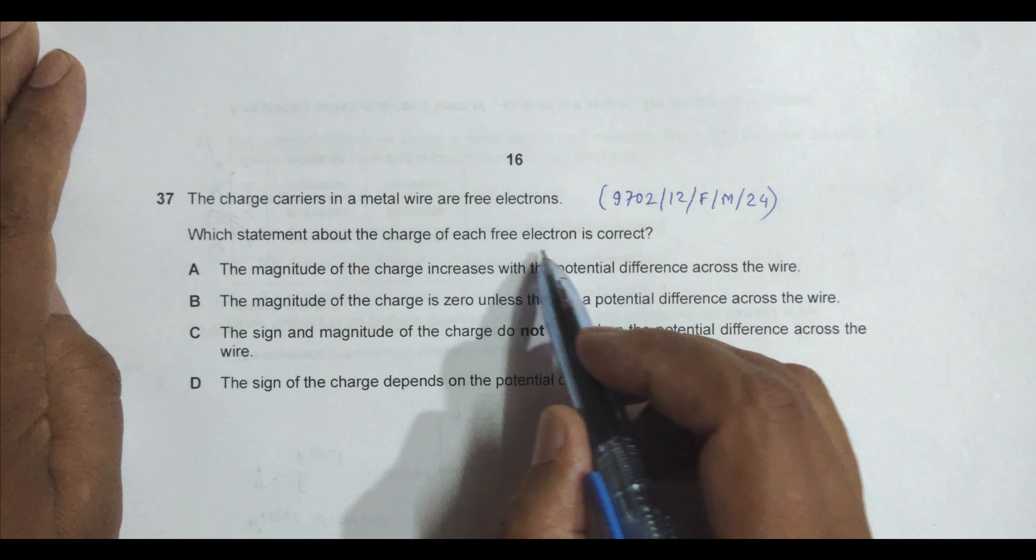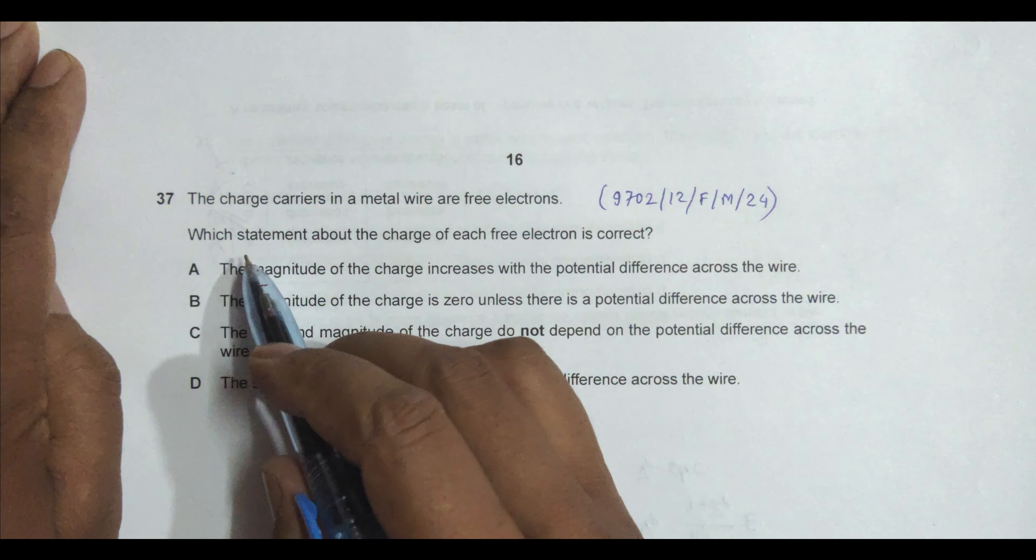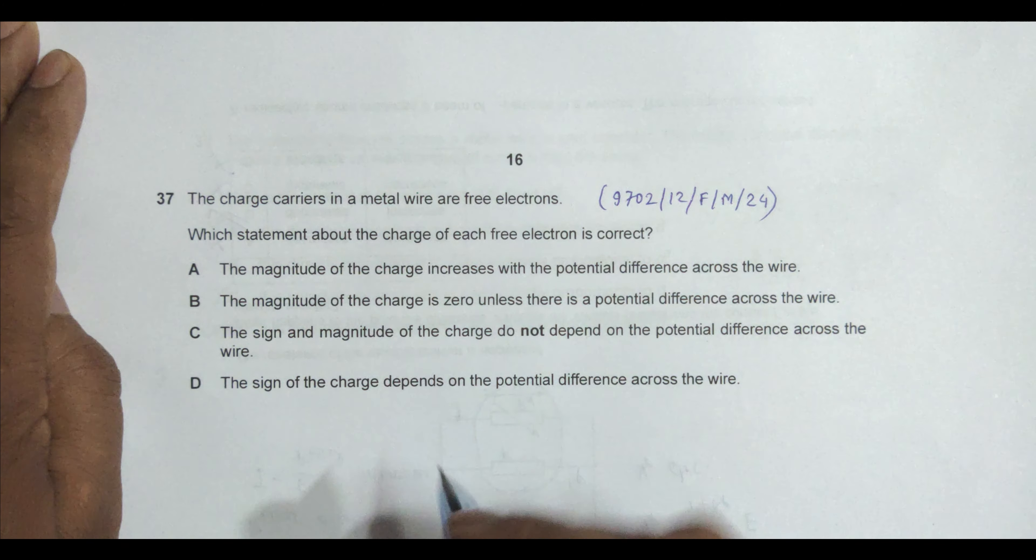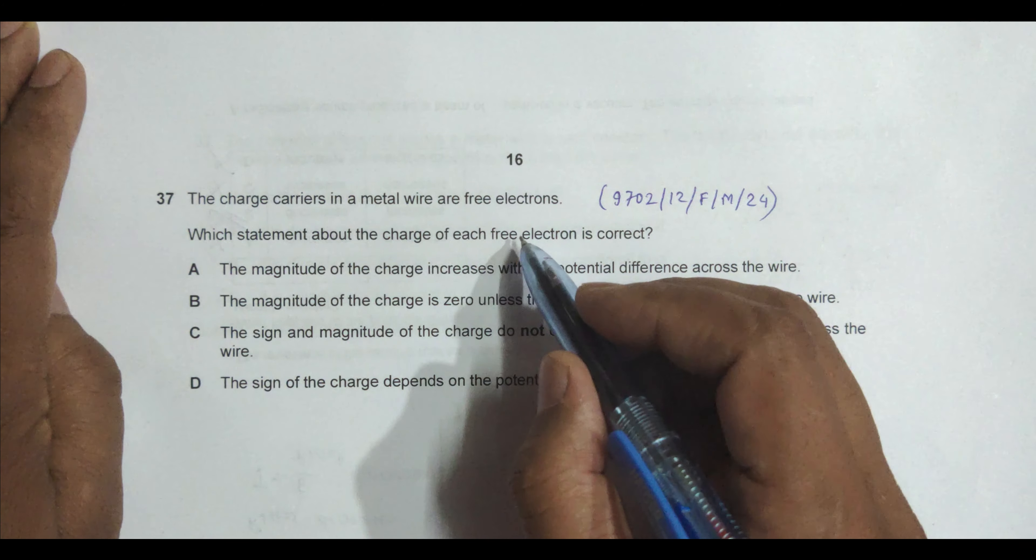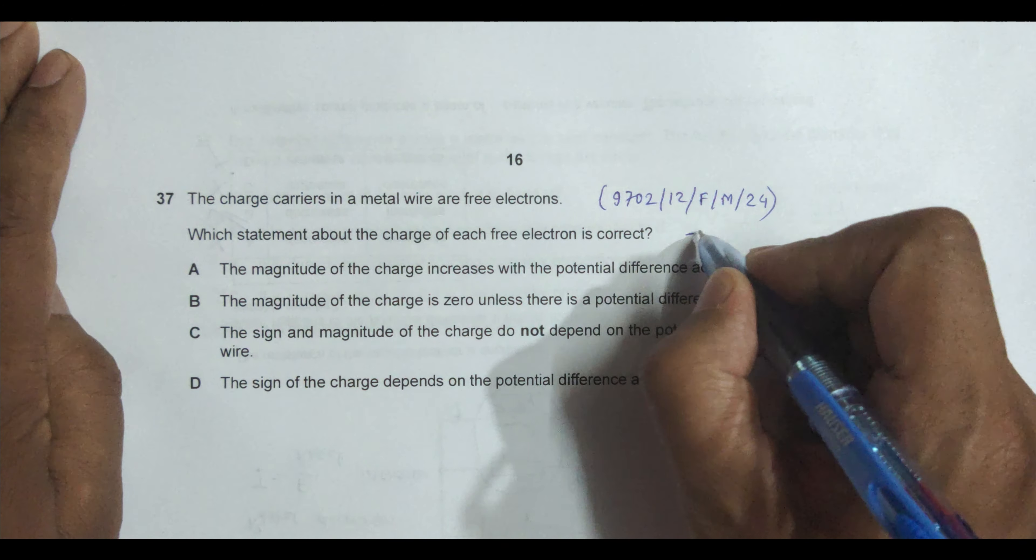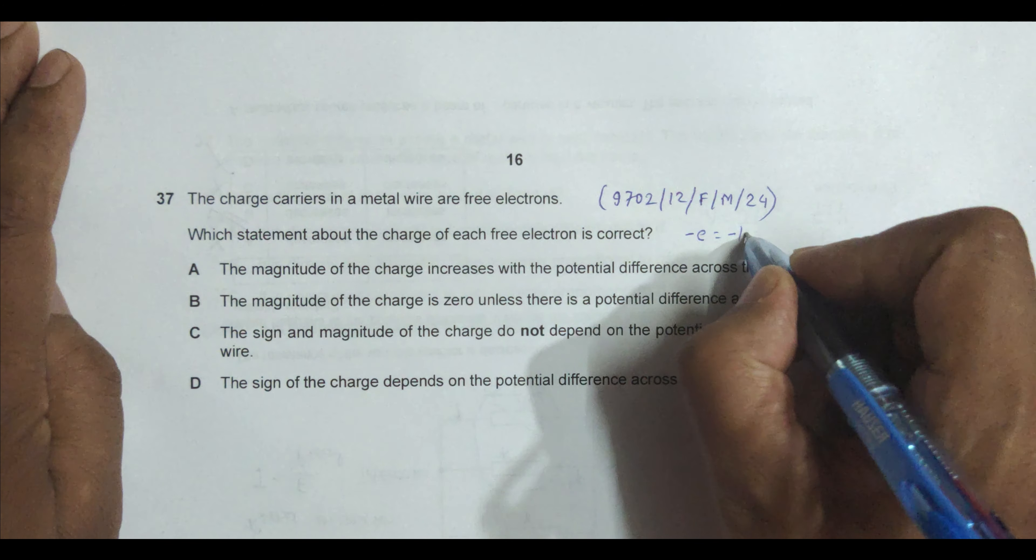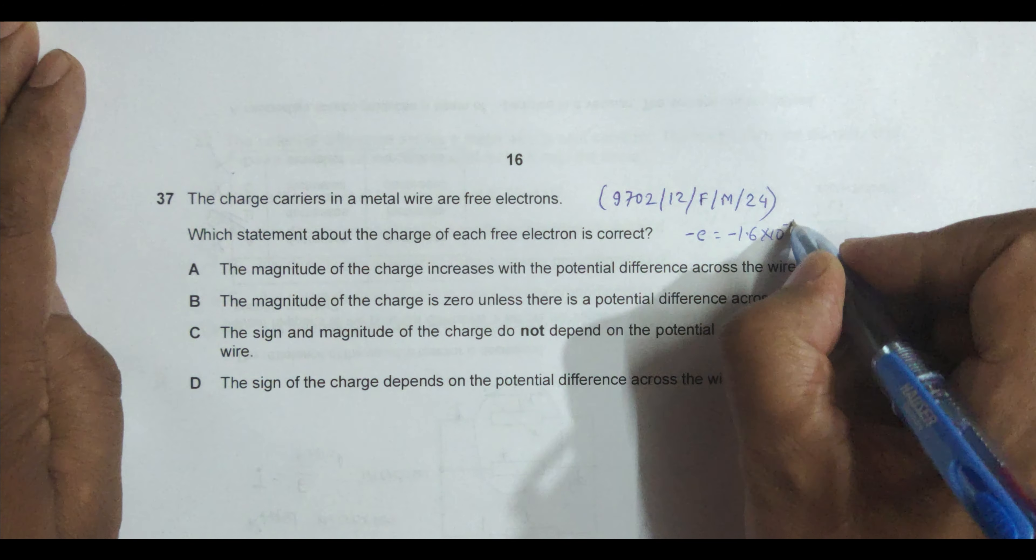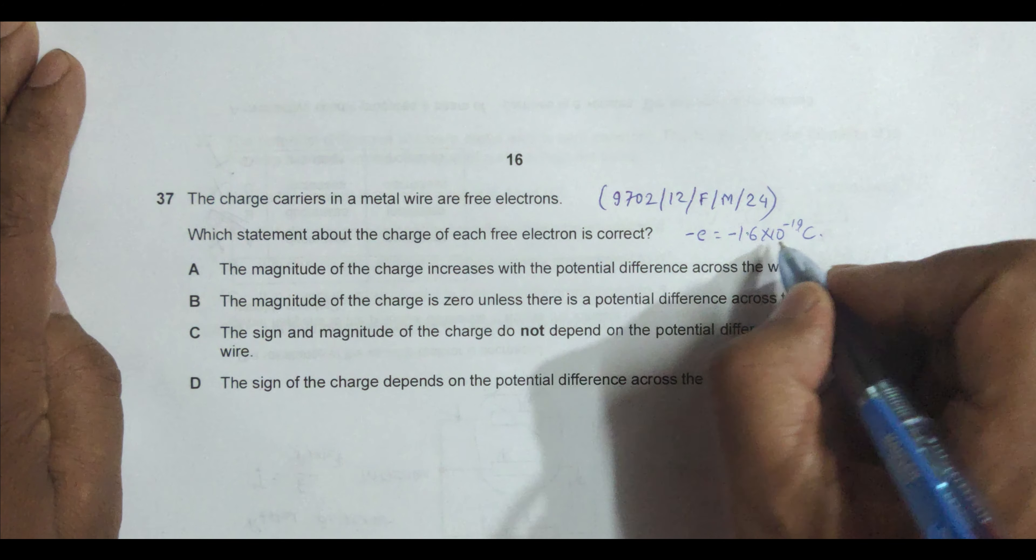Which statement about the charge of each free electron is correct? One thing to remember for solving this problem is the key to the answer: the charge of any electron is minus e, equal to minus 1.6 into 10 to the power minus 19 coulombs, negative charge.